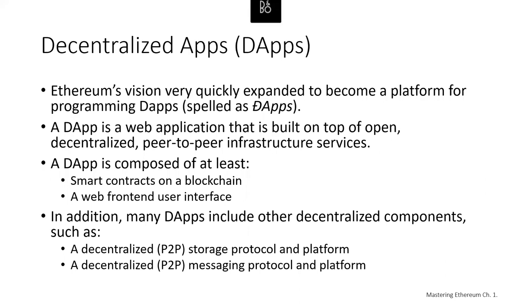Ethereum started as a way to make a general purpose blockchain that could be programmed for a variety of uses, but very quickly Ethereum's vision expanded to become a platform for programming decentralized applications, or DApps. DApps represent a broader perspective than smart contracts. A DApp is, at the very least, a smart contract and a web user interface. More broadly, a DApp is a web application built on top of open, decentralized peer-to-peer infrastructure services. A DApp is composed of at least smart contracts on a blockchain and a web front-end user interface. In addition, many DApps include other decentralized components, such as a decentralized peer-to-peer storage protocol and platform, and a decentralized peer-to-peer messaging protocol and platform.